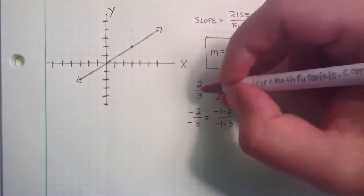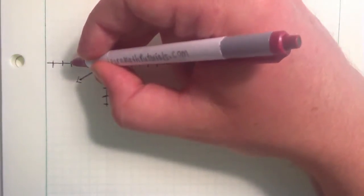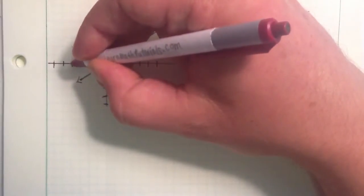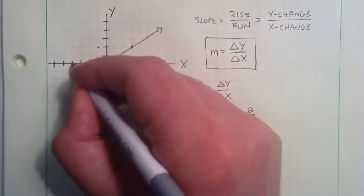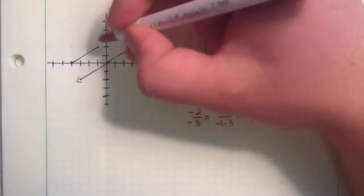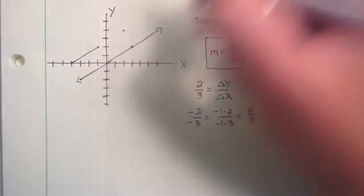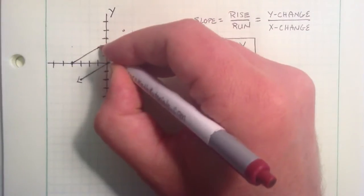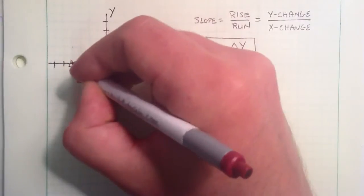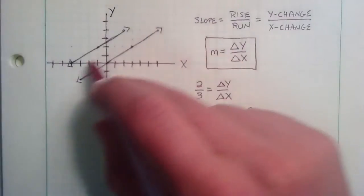We could also write another line with a slope of 2 thirds. We could start it from this point, count up 2, then over 3, and connect those 2 points — you start to get another line over here with the same slope. Let's do it one more time: up 2, then over 3. You end up getting a line that is parallel to the first. So lines with the same slope end up being parallel to one another.